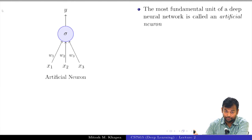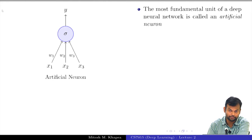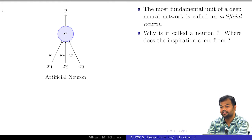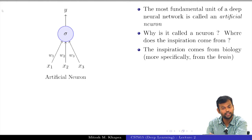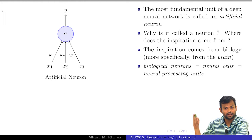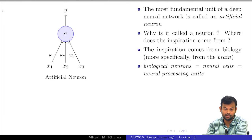This is a course on Deep Learning. We are going to talk about deep neural networks. The most fundamental unit of a deep neural network is something known as an artificial neuron. Now, the question is why is it called a neuron? Where does the inspiration come from? We already know that the inspiration comes from biology and more specifically from the brain, because way back in the 1890s this term neuron was coined for neural processing units or the cells in our brain.